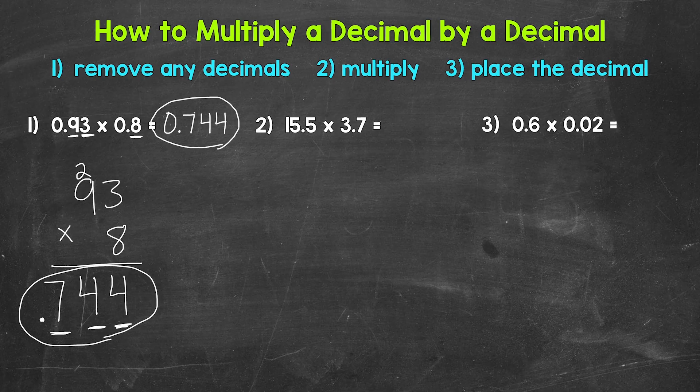744 thousandths. When I rewrote that answer, I put a 0 in the ones place. That 0 in the ones place makes it clear we have a decimal point here and we don't have any whole numbers. That 0 helps us see the decimal point so we don't overlook it and think this is 744. Something to keep in mind when working with decimals.